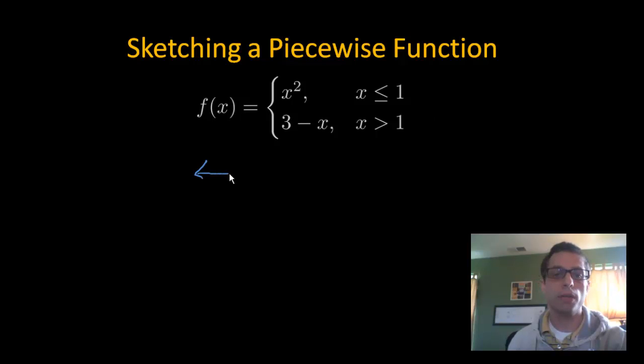I want to go over this real fast. When you have your number line and you have a piecewise function, that means you're jumping from one piece, one graph, to another.